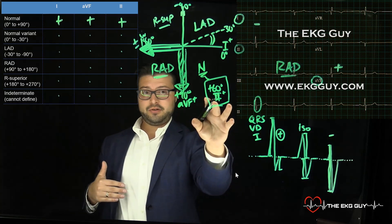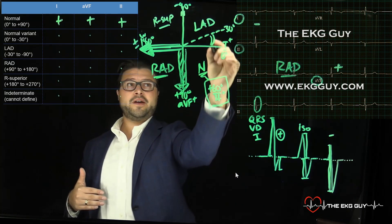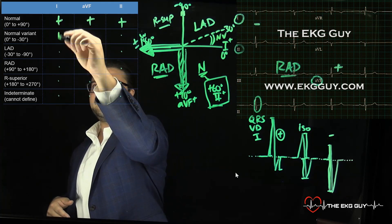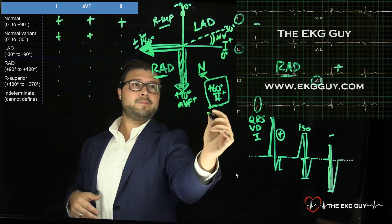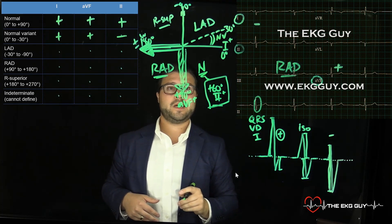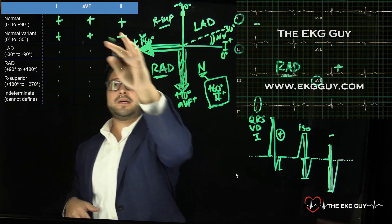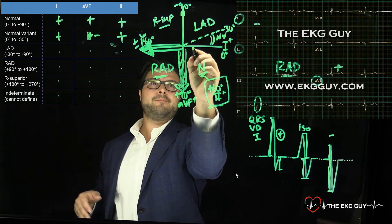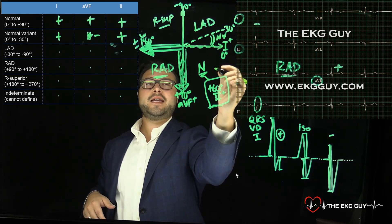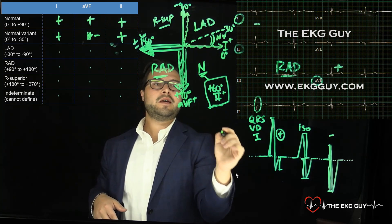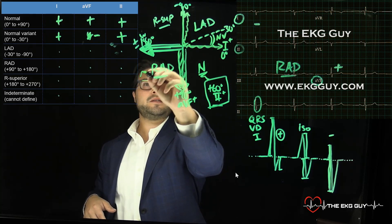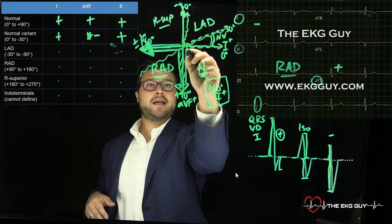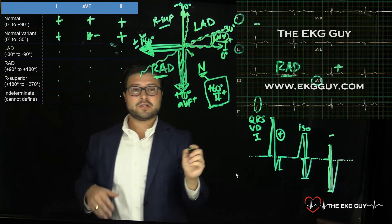When looking at a normal variant, lead II becomes important. Normal variant is in the zero to negative 30 degree range. In that case, you'll have a positive in lead I, a negative in AVF, and lead II should be positive — because lead II sits perpendicular to that boundary. If lead II is positive, you fall in the normal variant range. This is still considered acceptable in adults, particularly older patients.